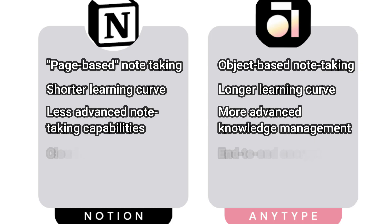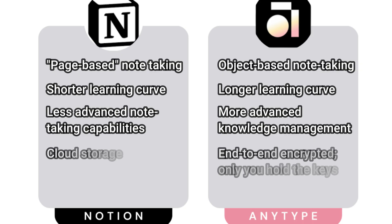If security and privacy are top priorities for you, AnyType is a better alternative. AnyType has end-to-end encryption, which means even the AnyType team cannot read your data. On the other hand, Notion offers cloud storage, so all your notes are stored on Notion's servers.